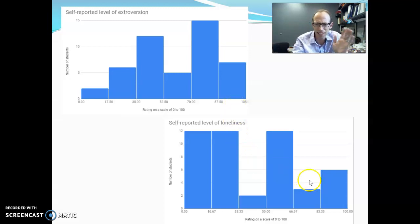So let's take a bar here for example. Let's take this one right here. This tells us that three students had a loneliness rating between 67 and 83 basically. So there were three students that rated their loneliness levels between a 67 and 83. We don't know exactly where, but somewhere in there.